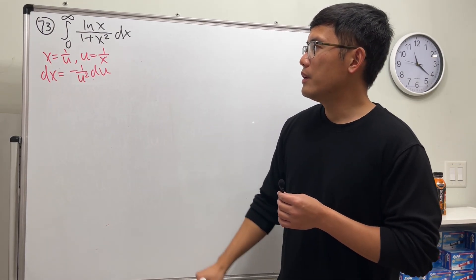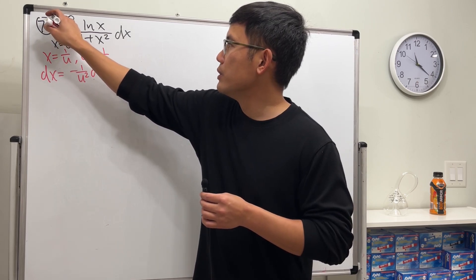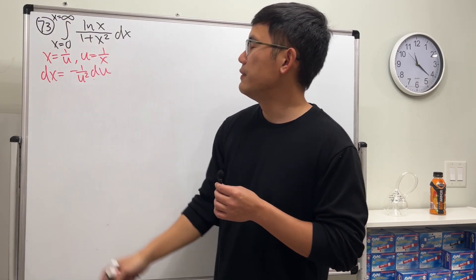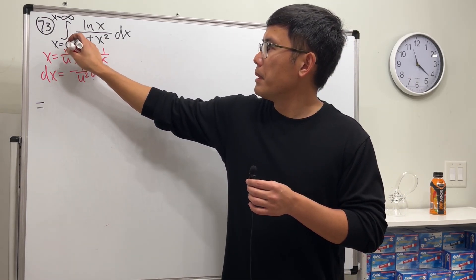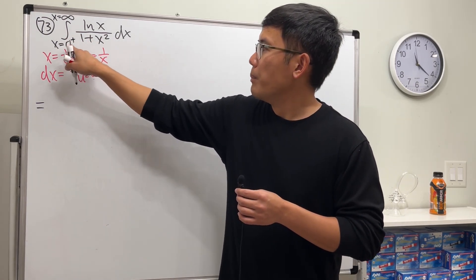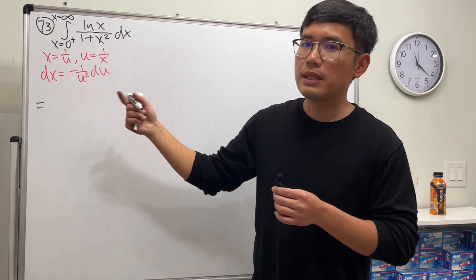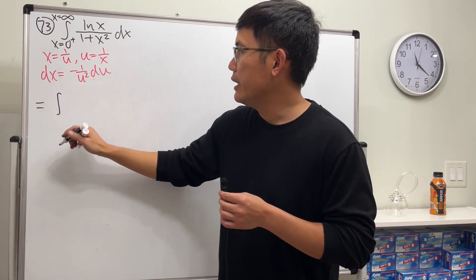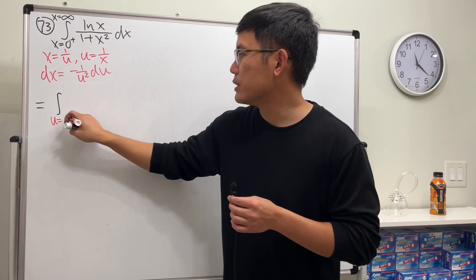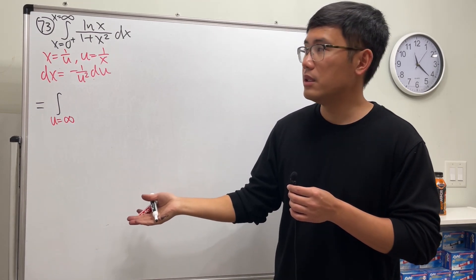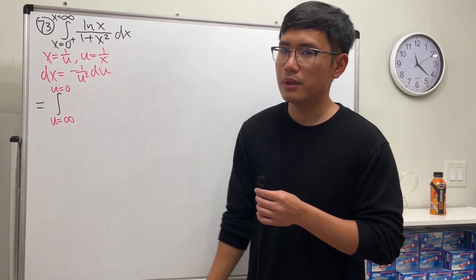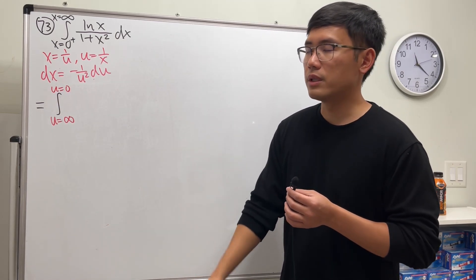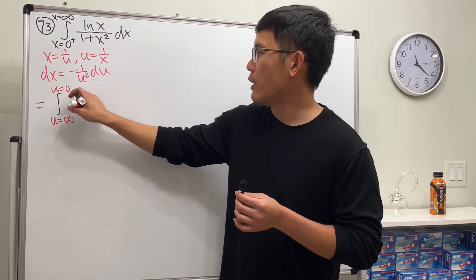All right, be careful. x going from zero to infinity, technically this is zero plus. One over zero plus is infinity, so in the u world you start at infinity to here, u is equal to zero. It's kind of like in the wrong order, huh. All right, and then we have ln x is 1 over u.